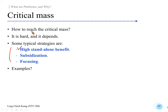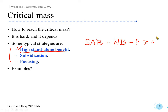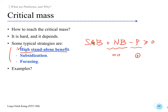The first typical strategy is to create high stand-alone benefits. Recall the formula: stand-alone benefit plus network benefit minus price should be non-negative for some people to enter your platform. At the beginning, you don't have many users, so network benefit is pretty much zero. You still want to sell your product, so you really need to create stand-alone benefit to satisfy this equation.